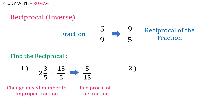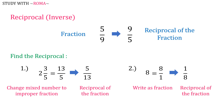For number 2, find the reciprocal of 8. 8 is a whole number. We have to write it first as a fraction, so 8 as a fraction is 8 over 1. Now, the reciprocal of 8 over 1 is 1 over 8.